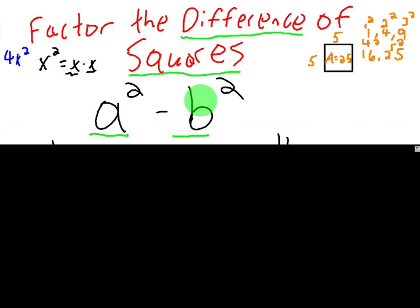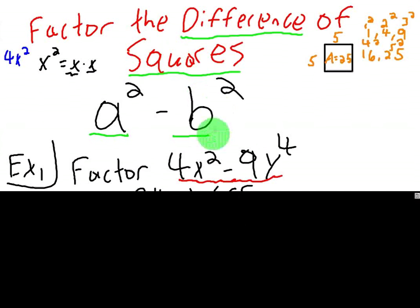So you do need to write this down, a squared minus b squared. That's kind of the form these problems are going to take on. Let's do the first example. We have 4x squared minus 9y to the 4th. Here's how you know if you can factor using the difference of squares. Notice the coefficients of perfect squares, 4 and 9. Notice my exponents, too. They're both even.